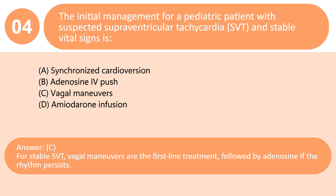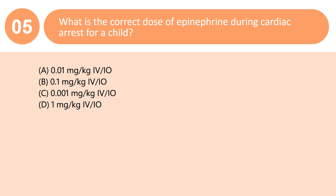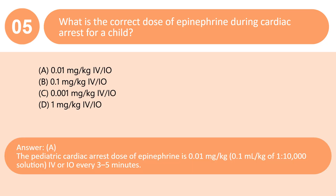What is the correct dose of epinephrine during cardiac arrest for a child? A. 0.01 mg/kg IV/IO. B. 0.1 mg/kg IV/IO. C. 0.001 mg/kg IV/IO. D. 1 mg/kg IV/IO. Answer: A. The pediatric cardiac arrest dose of epinephrine is 0.01 mg/kg — 0.1 mL/kg of 1:10,000 solution — IV/IO every 3 to 5 minutes.